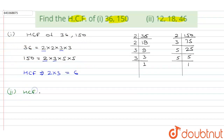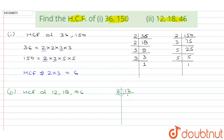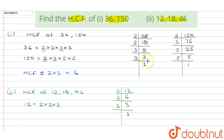Now let's go to the second question, where we have to find the HCF of 12, 18, and 46. We'll factorize them one by one. The factorization of 12: 12 is divisible by 2, giving 6; 6 is divisible by 2, giving 3; and 3 is divisible by 3. So the factors of 12 are 2 × 2 × 3.